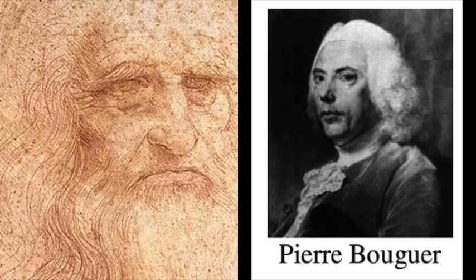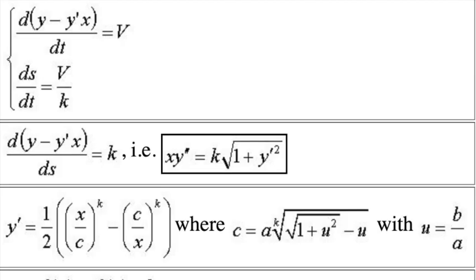Historically, the curve of pursuit is said to have been originally proposed by Leonardo da Vinci in the form of a cat and a mouse chase, but was first solved by the French mathematician Pierre Bouguer in 1732. As a student, one gets exposed to this kind of problems through differential equations sometime during sophomore undergraduate level.